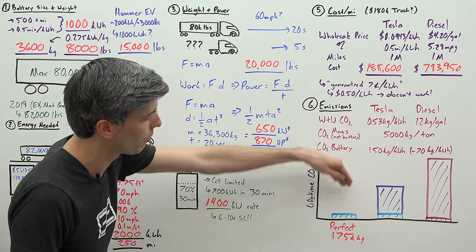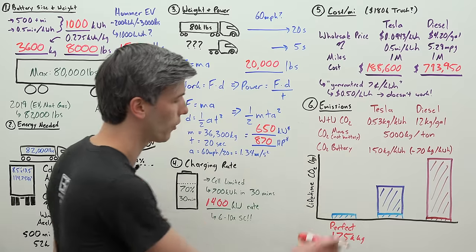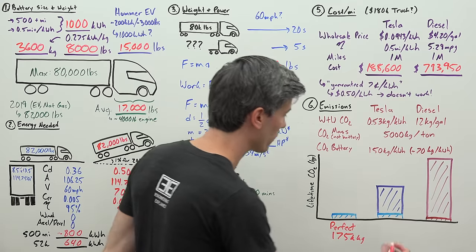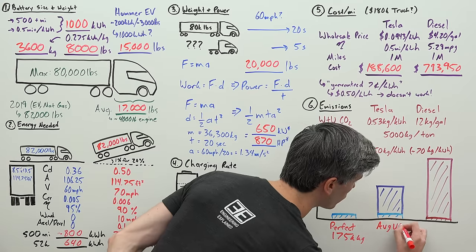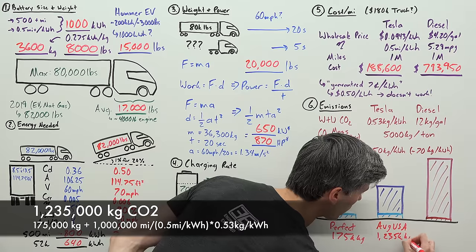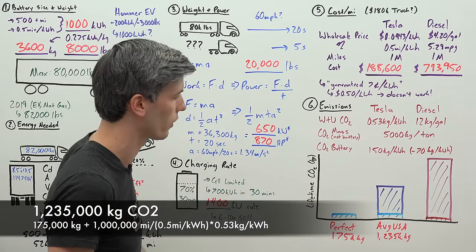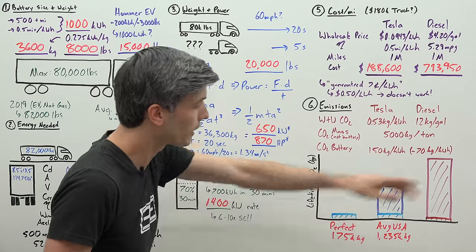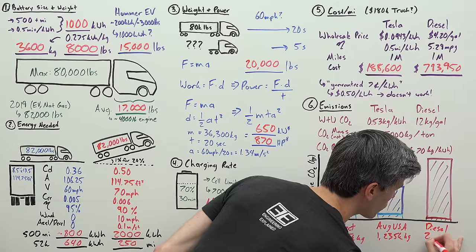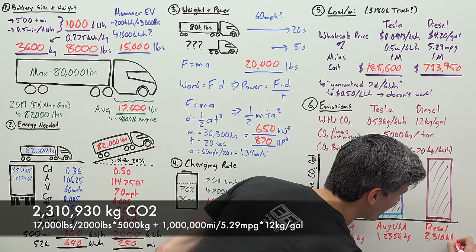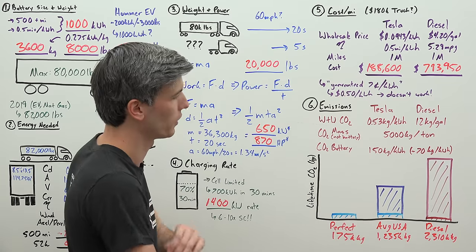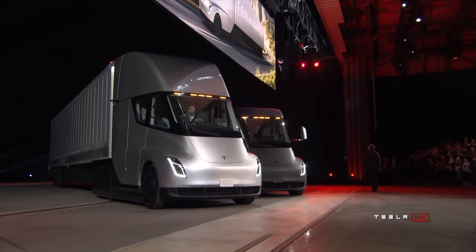Not really achievable because there's going to be some emissions associated with creating solar power, wind power, whatever. But far lower numbers, so it can approach this perfect scenario. Realistically using the average mix of electricity within the United States, we're looking at 1,235,000 kilograms of CO2 emitted to travel those million miles for this vehicle.